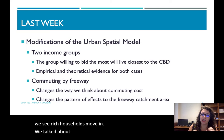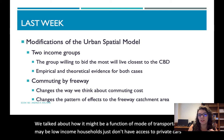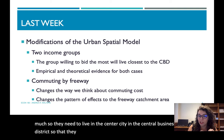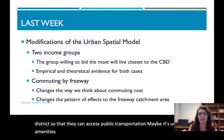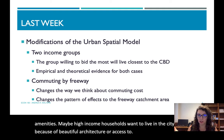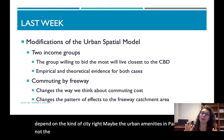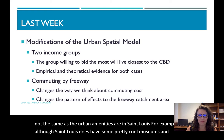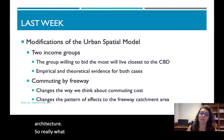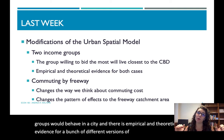We talked about how income distribution might be a function of mode of transportation — low-income households may not have access to private cars, so they need to live near the central business district to access public transportation. Maybe it's urban amenities: high-income households want to live in the city center for architecture, entertainment, or restaurants. That depends on the kind of city — the urban amenities in Paris are not the same as in St. Louis. So there are a lot of different models of how two income groups behave in a city, and there's empirical and theoretical evidence for multiple versions.